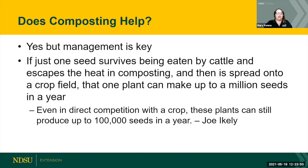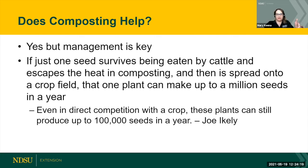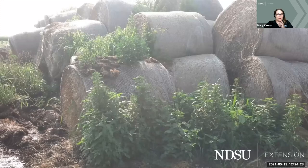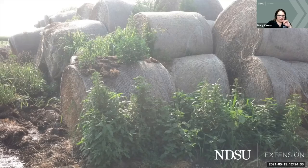Does composting help with Palmer amaranth? Yes, but management is key. If just one seed survives being eaten by cattle and escapes the heat of composting, gets spread onto a crop field — one plant can make a million seeds in a year. Even in direct competition with a crop, these plants still produce up to 100,000 seeds per year. That's why it spreads so quickly. Here's a picture of a hay pile with all these weeds growing around it — that's Palmer or waterhemp. If we take that hay and feed it to our animals, we could potentially run into some issues.